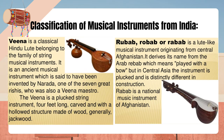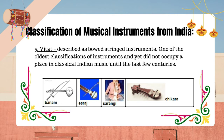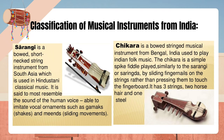Veetat — described as bowed stringed instruments. This is one of the oldest classifications of instruments and yet did not occupy a place in classical Indian music until the last few centuries. Sarangi is a bowed, short-necked string instrument from South Asia used in Hindustani classical music. It is said to most resemble the sound of the human voice, able to imitate vocal ornaments such as gamaks, shakes, and meends (sliding movements). Shakara is a bowed stringed musical instrument from Bengal, India, used to play Indian folk music. It is played by sliding fingernails on the strings rather than pressing them to the fingerboard. It has three strings: two horsehair and one steel.